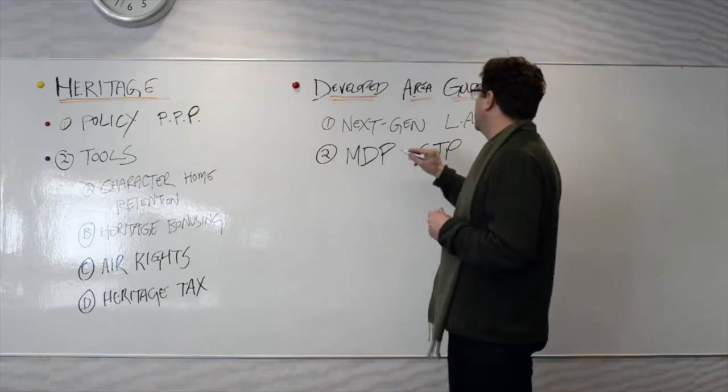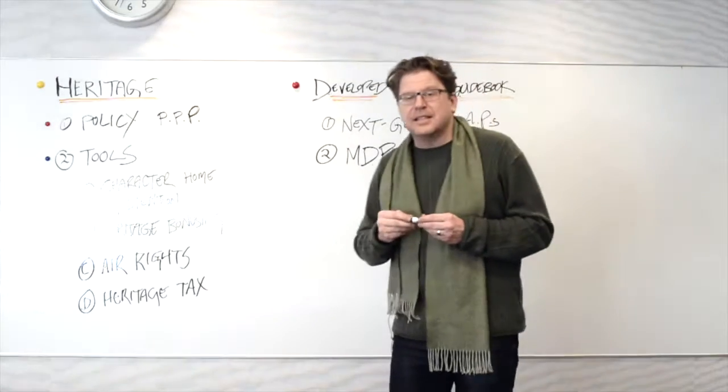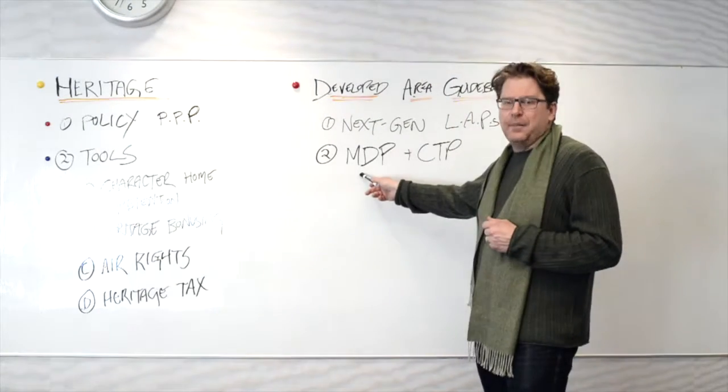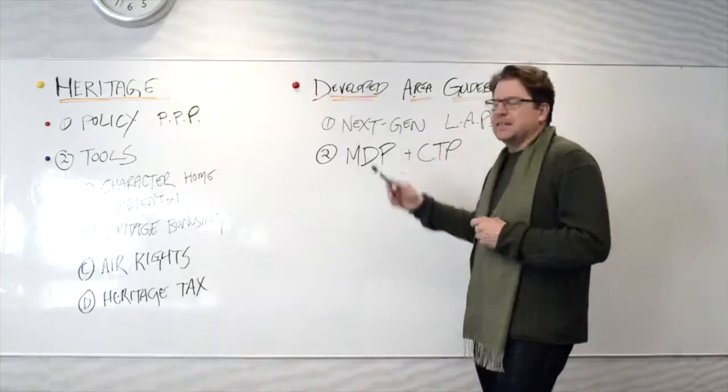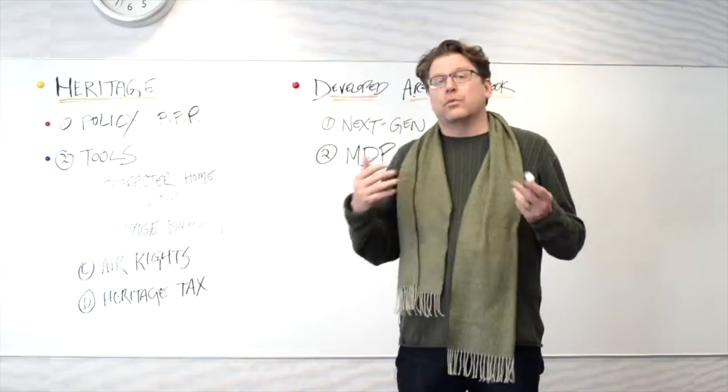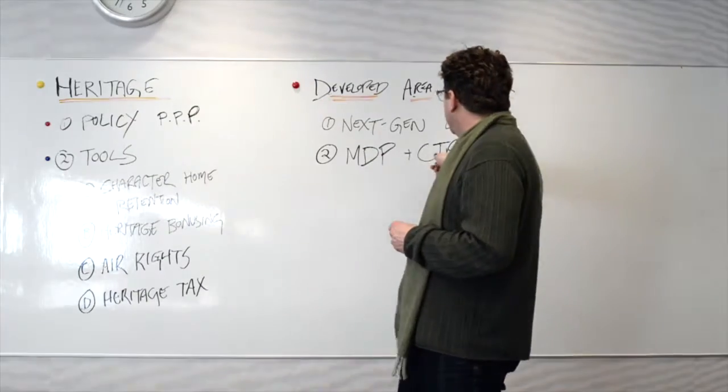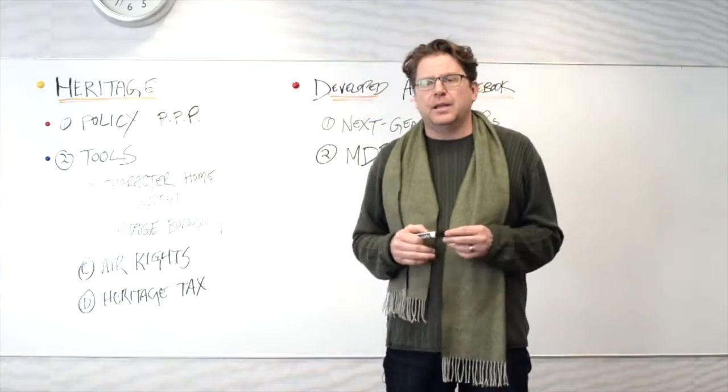And interestingly enough, in 2009, there was still enough of a disconnect between how we move around the city and what's happening on the ground in the city that these things were separate documents. In the redux, which is going to be informed by the Developed Area Guidebook, these are going to become one plan, the Calgary Plan.